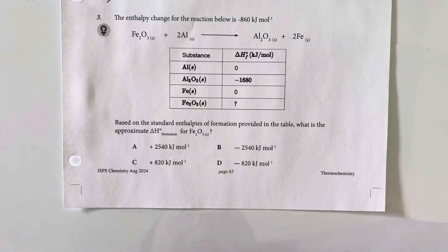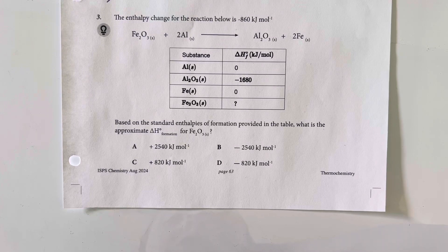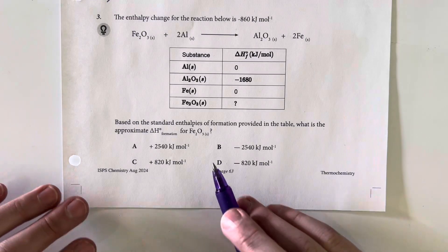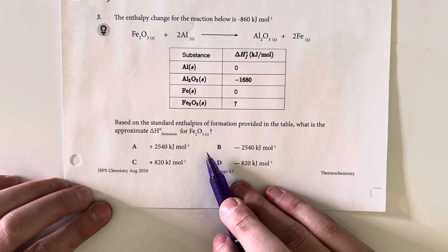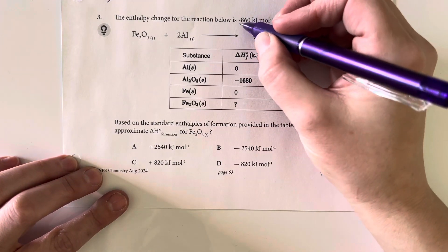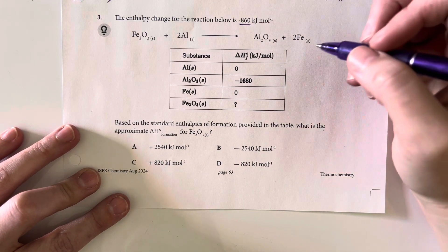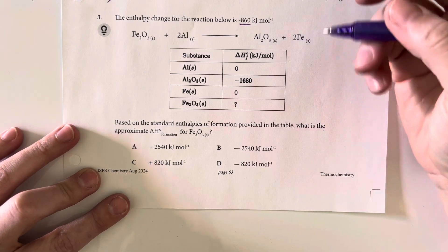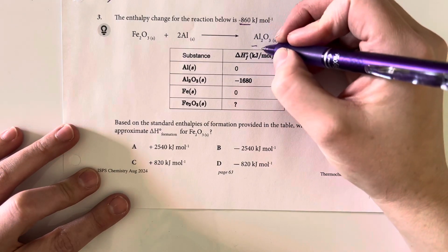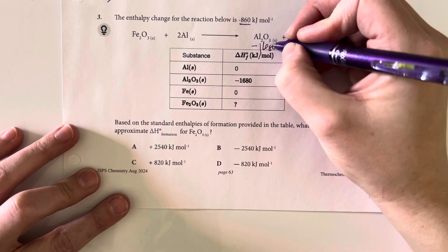The enthalpy change for the reaction below is negative 860 kilojoules per mole. Based on the standard enthalpies of formation provided in the table, what is the approximate delta H of formation for the iron(III) oxide? We know that our net is going to be negative 860, and we can figure out what's going on with all of them relative. We have 1680 here.